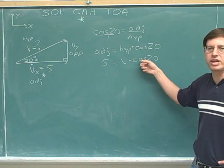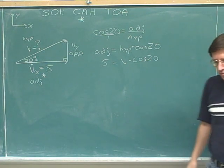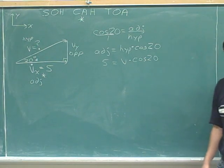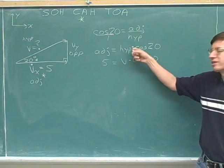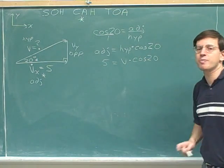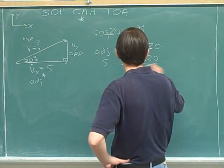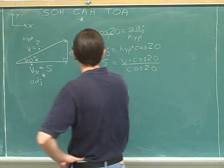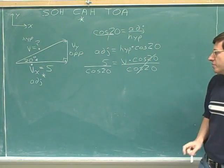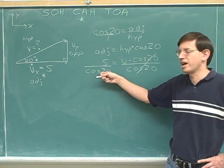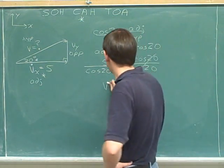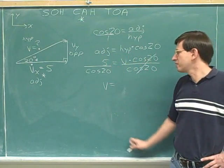How is the cosine 20 attached to v? It's attached by multiplication. So the opposite operation is division — we divide both sides by cosine 20. That allows us to cancel the cosine 20 on the right. If we divide by cosine 20 on the right, we're obligated to divide by cosine 20 on the left — that's how algebra works. On the right side we're left with just v; on the left we have 5 divided by cosine 20.